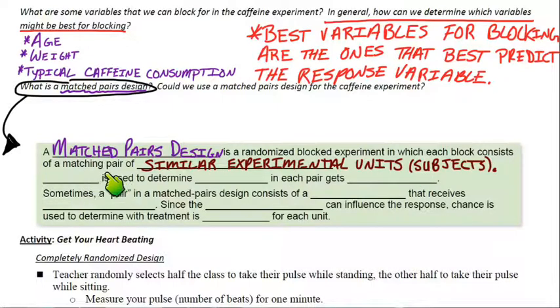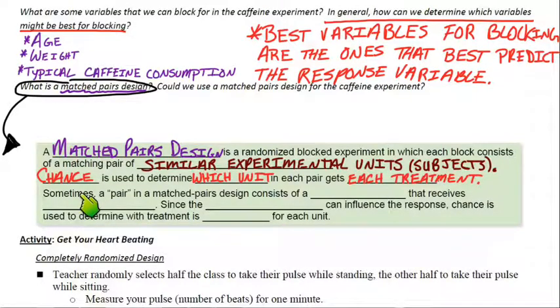And we have chance. Chance is used to determine which unit in each pair gets each treatment. So that's actually really familiar. We know how important it is to randomly assign treatments. So you randomly assign, there's only two, like two people or two units in the pair. You randomly assign the treatment to one or the other.